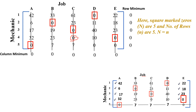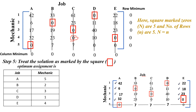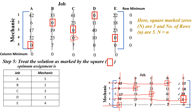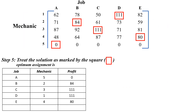In the next step, check if the total number of square-marked zeros equals the total number of rows. Here, the number of square-marked zeros is 5 and the number of rows is 5, so they are equal — go to step 5. Step 5: treat the solution as marked by the squares. The optimal assignment is: Job A → Mechanic 5, Job B → Mechanic 2, Job C → Mechanic 3, Job D → Mechanic 1, Job E → Mechanic 4.